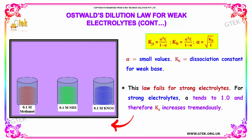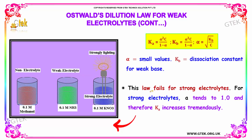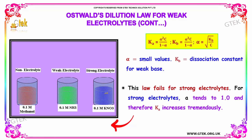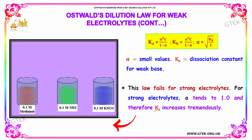This law fails for strong electrolytes. For strong electrolytes, alpha tends to 1.0, and therefore Ka increases tremendously, making the law inapplicable.